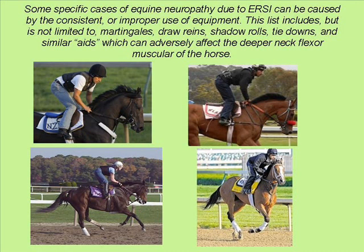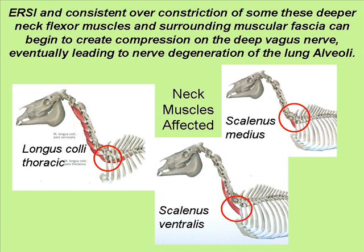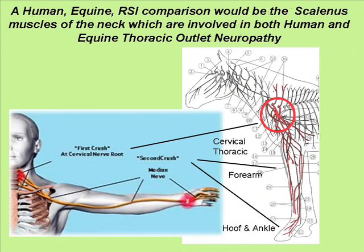Some specific cases of equine neuropathy due to ERSI can be caused by the consistent or improper use of equipment. This list includes, but is not limited to, martingales, draw reins, shadow rolls, tie-downs, and similar aids, which can adversely affect the deeper neck flexor muscles of the horse. ERSI and consistent over-constriction of some of these deeper neck flexor muscles and surrounding muscular fascia can begin to create compression of the deep vagus nerve, eventually leading to nerve degeneration of the lung alveoli. A human-equine RSI comparison would be the scalenus muscles of the neck, which are involved in both human and equine thoracic outlet neuropathy.